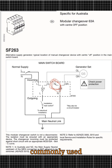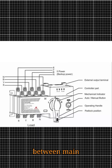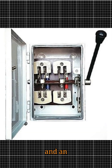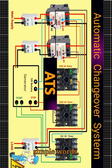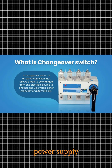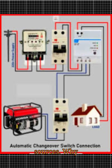It is commonly used to switch between main power supply — utility, grid — and an alternate source such as a generator, inverter, or solar. In simple words, it ensures uninterrupted power supply by allowing safe switching between two or more power sources.